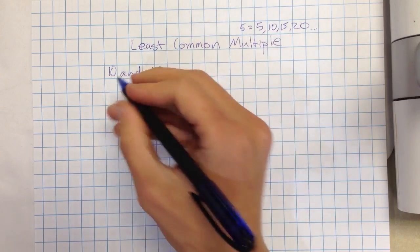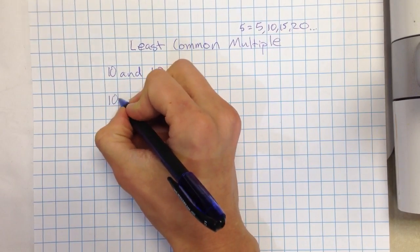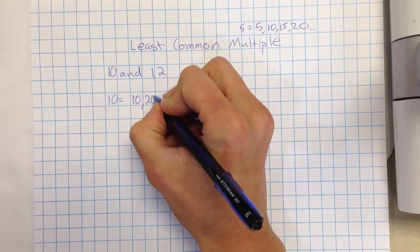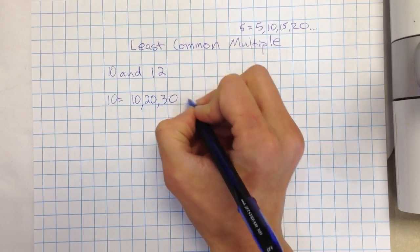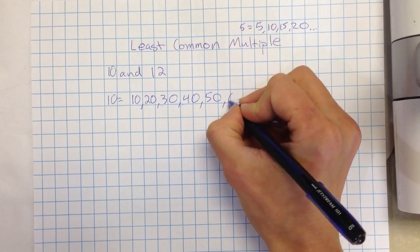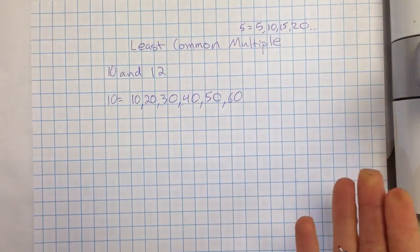So if I listed out the multiples, start with ten. I'm going to list all the multiples. We have ten, ten times two is twenty, thirty, forty, fifty, sixty. Anyway, I could keep going on and on and on.